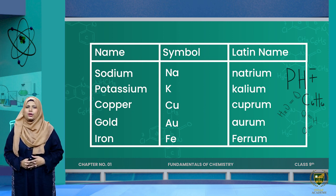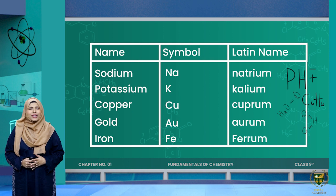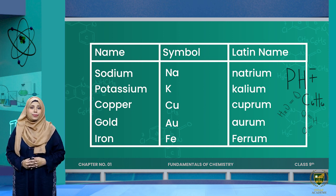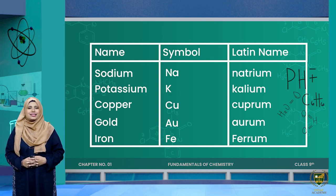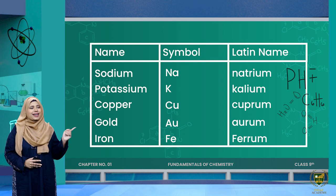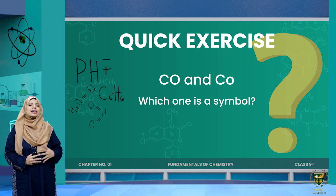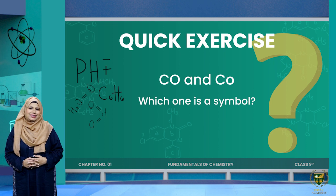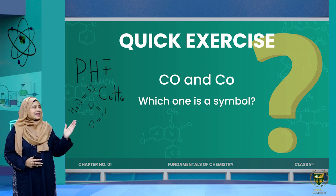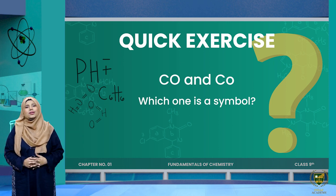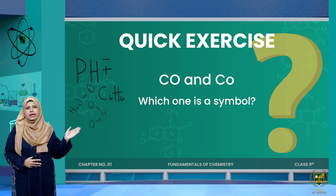I hope writing symbols is now clear for you. By looking at symbols you can tell whether something is an element or not. Remember the rules: either one letter or two letters; if one letter it should be capital; if two letters, first is capital and second is small. For example, 'Co' with capital C and small o is the symbol for cobalt, but 'CO' with capital C and capital O is not a valid symbol because a symbol cannot consist of two capital letters.